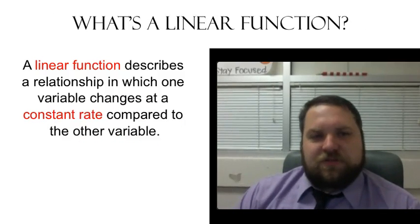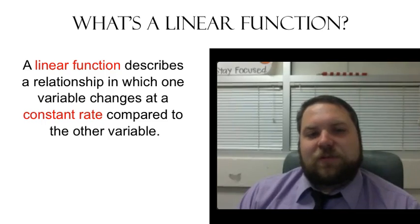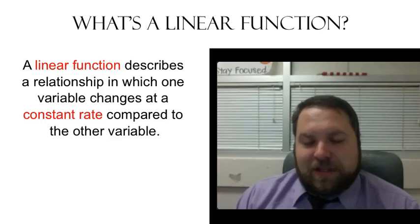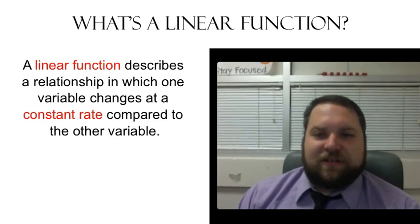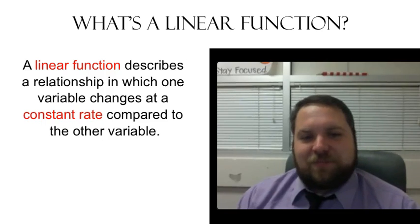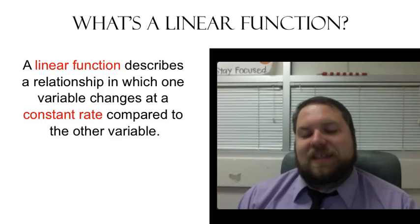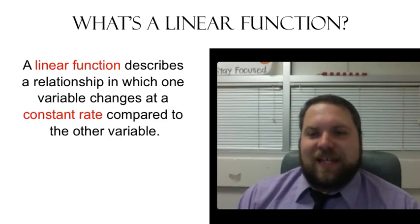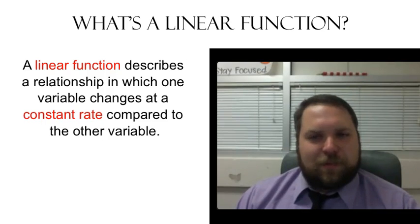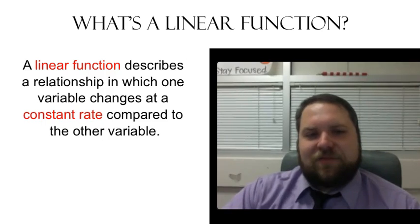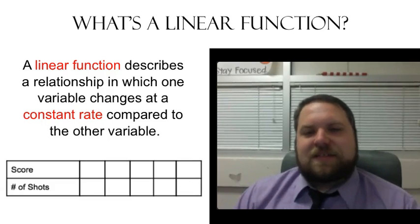So a linear function describes a relationship in which one variable changes at a constant rate compared to the other variable. And by the way, if you completely understand a linear function from that definition, bravo. As a student, you have a bright future ahead of you. For the rest of us, we need to break that definition down into its component parts, analyze it a little bit, see what's going on, and maybe come up with some alternate ways of understanding this. But to tackle the definition head on, let's look at this.